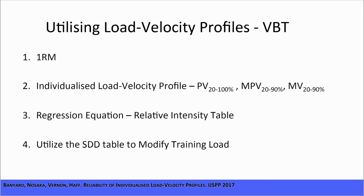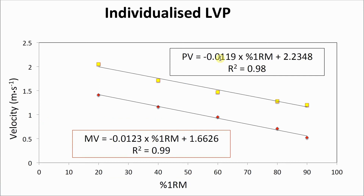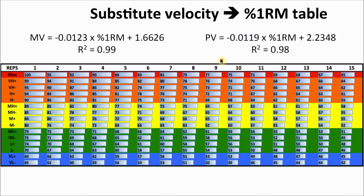For the practical applications: if you're looking to utilize load-velocity profiles to train an individual in the free weight back squat, first you perform a 1RM assessment. Then you conduct an individualised load-velocity profile assessment using the exact lifting loads from the 1RM — you can use PV, MPV, or MV. You then plot the load against the velocity and fit a linear regression line of best fit, and use the subsequent equation to convert a relative intensity table into a movement velocity table.